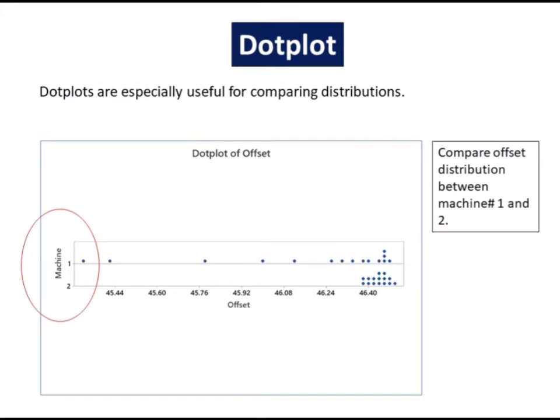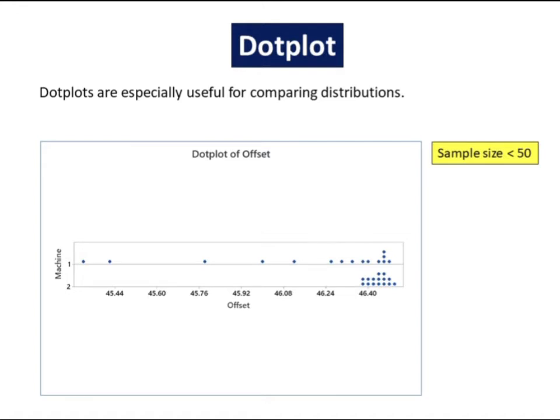For example, compare offset distribution between machine number 1 and 2. A dotplot works best when the sample size is less than approximately 50.